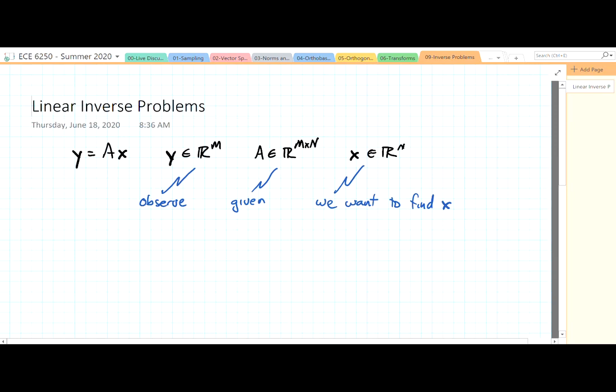These types of problems have many applications that we will explore as we develop some of the theory behind it. So the basic idea is pretty straightforward. We have the problem some vector y is equal to matrix A times a vector x. And y is then what we observe. We're given A and we want to find x.